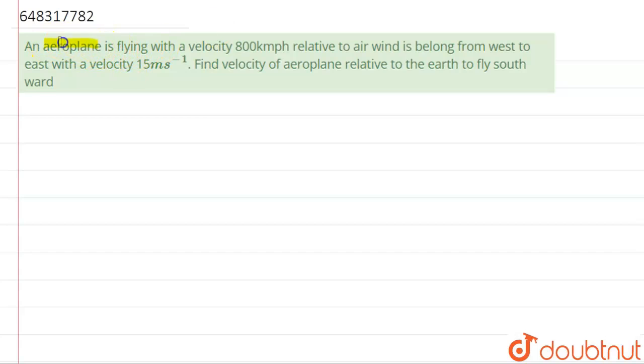Well, hello students. Now we're going to see this question. The question says that an aeroplane is flying with a velocity of 800 kilometers per hour relative to the air. Wind which comes from west to east direction with a velocity of 15 meter per second. The velocity of aeroplane relative to earth flying southwards is...